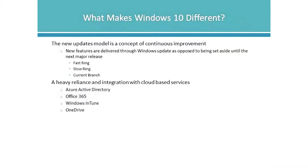Microsoft is really adopting more of the Apple model — slight revisions to the operating system being released through the Windows Update process as opposed to a full-on deployment of a new OS. That new updates model is a concept of continuous improvement. Instead of waiting until the next major version, they are going to continually improve this edition of the operating system. New features are going to be delivered through Windows Update as opposed to being set aside until the next major release.